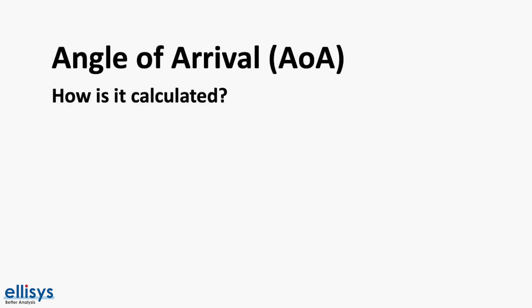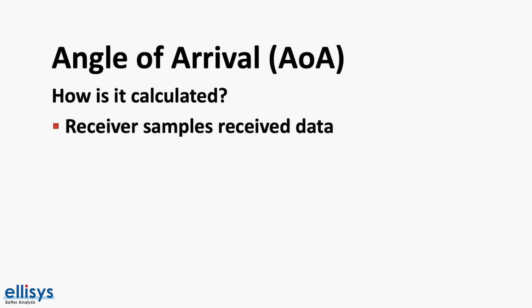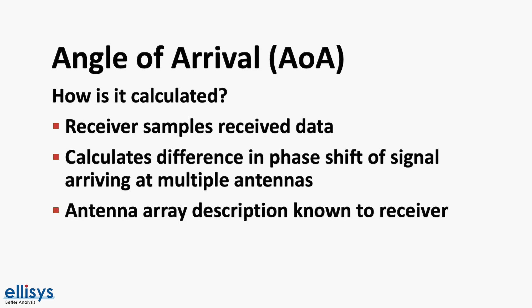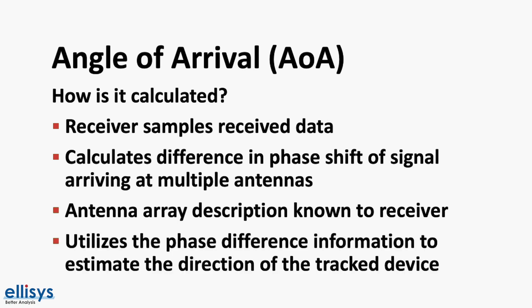So how is the angle of arrival estimated or calculated? Without getting into too much detail, the received signal will have a different phase when arriving at each of the antennas of the receiver. Based on that difference between the phases of the received signal at each antenna, and since the distance between the antennas is fixed and known to the receiver, it can estimate the direction of the moving device. The details of this can get quite lengthy and probably deserves a whole video on its own, so we won't cover it here.